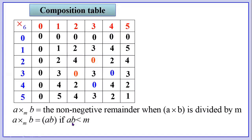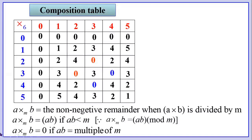If the product is more than M, then we have to use the remainder: A modulo M times B equals the non-negative remainder when A times B is divided by M. Suppose A times B is a multiple of M, then we write 0. For example, 2 into 3 is 6 — we write 0. 4 into 3 is 12, which is a multiple of 6, so we write 0. Whenever it is a multiple of M we write 0; if the product is less than M we write the product; if more than M we write the non-negative remainder.